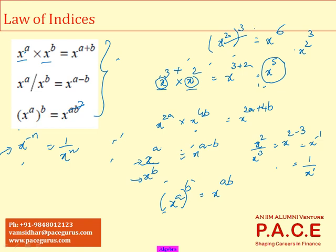This is not the same as x to the power of 2 to the power of 3 without a bracket. The bracket makes a difference. When x squared is in a bracket and raised to a further power, the exponents are multiplied. But without a bracket — for example x to the 2 to the 3 — you first simplify the inner power: 2 cubed is 8, so it becomes x to the power of 8. So x to the power of a, whole to the power of b equals x to the power of ab, whereas x to the power of a to the power of b (no bracket) is different. Be careful with these two calculations.